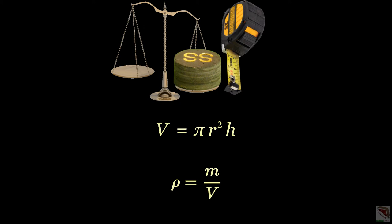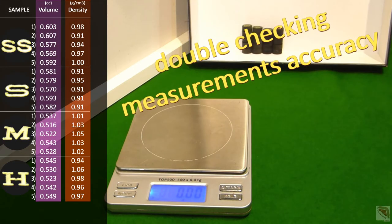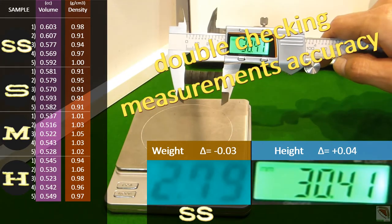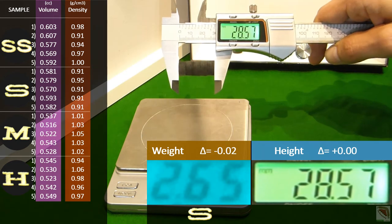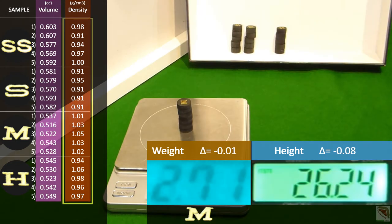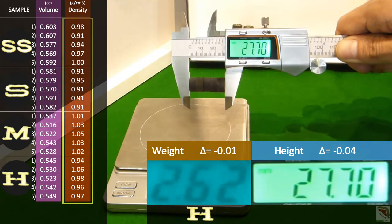He thankfully decided to revert to good old simple physics to help him make a quick and decisive decision. After double-checking his measurements, he could finally calculate how many grams were in each cubic centimeter of each cue tip. In other words, he now knew the exact density of each cue tip.